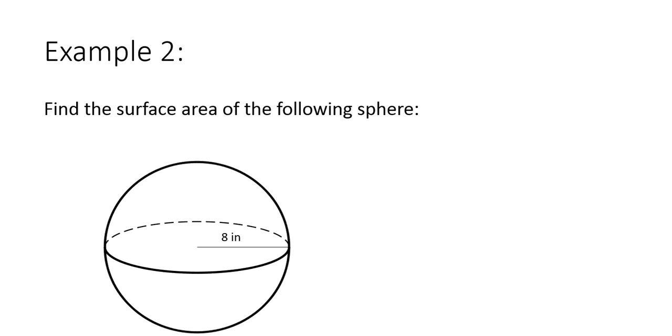So let's find the surface area of the following sphere with radius 8. So surface area equals 4π r². Substituting 8 in for r and use pi in the calculator and put it all in the calculator all at once. And you get the surface area to be 804.2 inches squared.